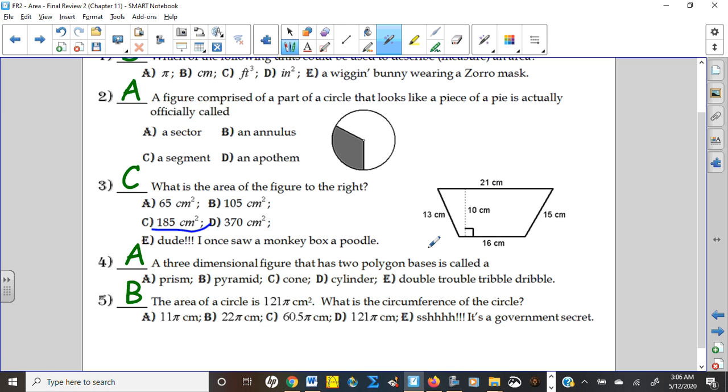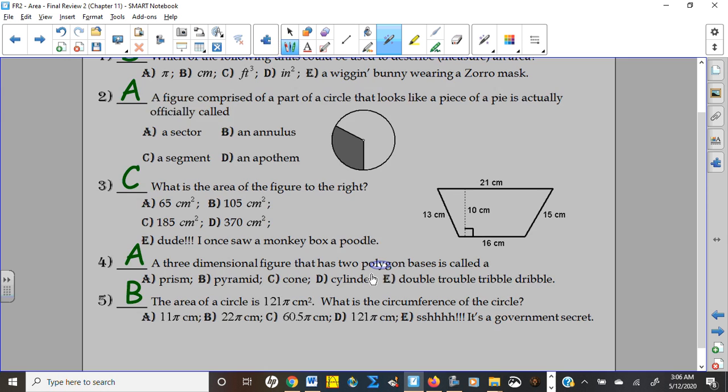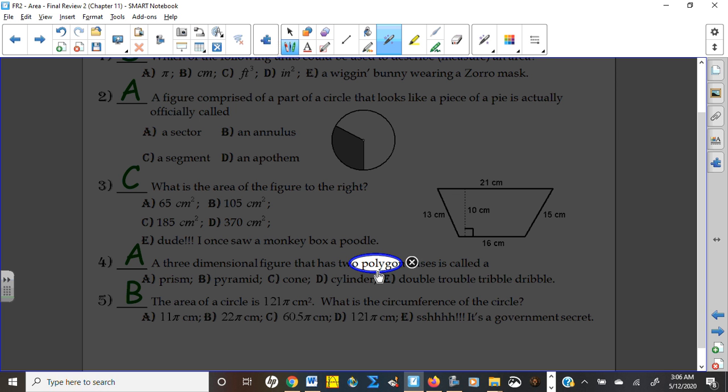Number four, three-dimensional object that has two polygons, so it has polygon bases. It can't be a cylinder or a cone. And then the fact that it has two of those polygon bases definitely makes it a prism.